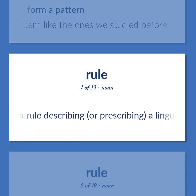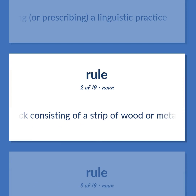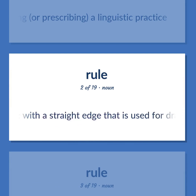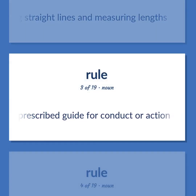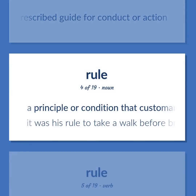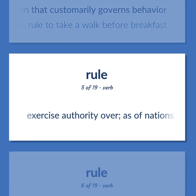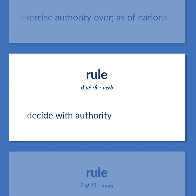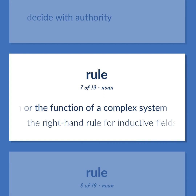Rule: linguistics — a rule describing or prescribing a linguistic practice. A measuring stick consisting of a strip of wood, metal, or plastic with a straight edge used for drawing straight lines and measuring lengths. A prescribed guide for conduct or action. A principle or condition that customarily governs behavior — it was his rule to take a walk before breakfast. Exercise authority over, as of nations. Decide with authority. A rule or law concerning a natural phenomenon or the function of a complex system — the right-hand rule for inductive fields.